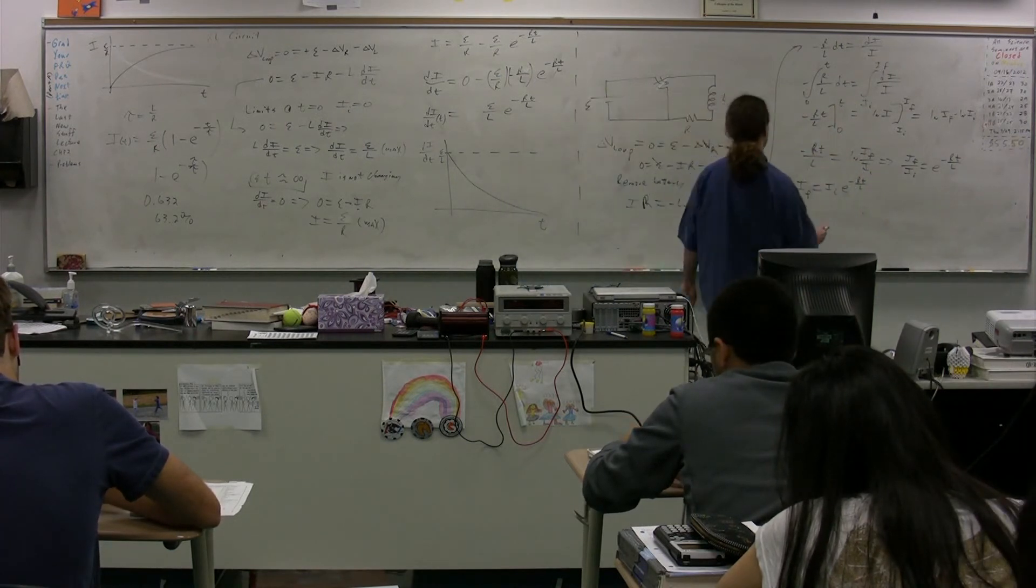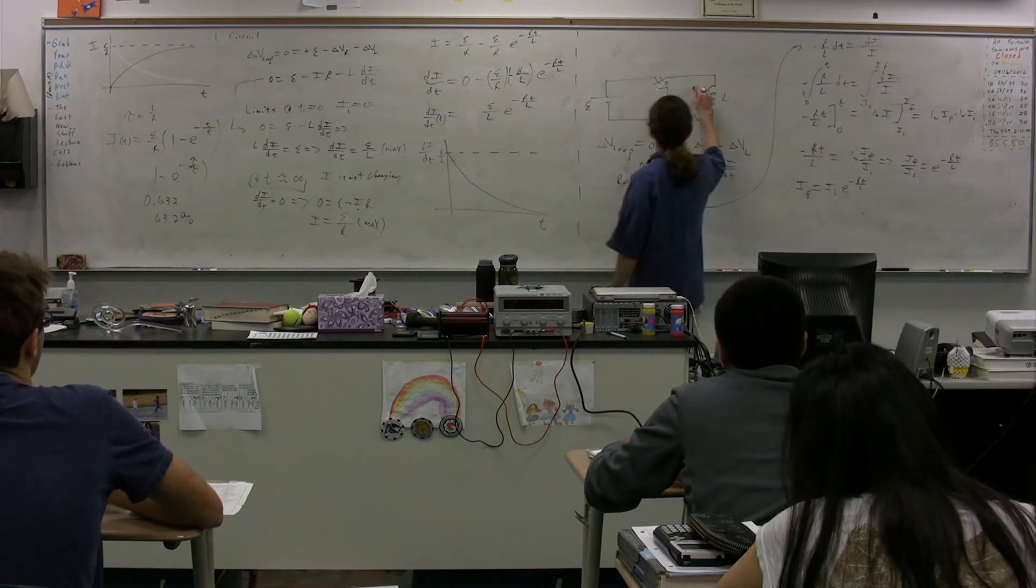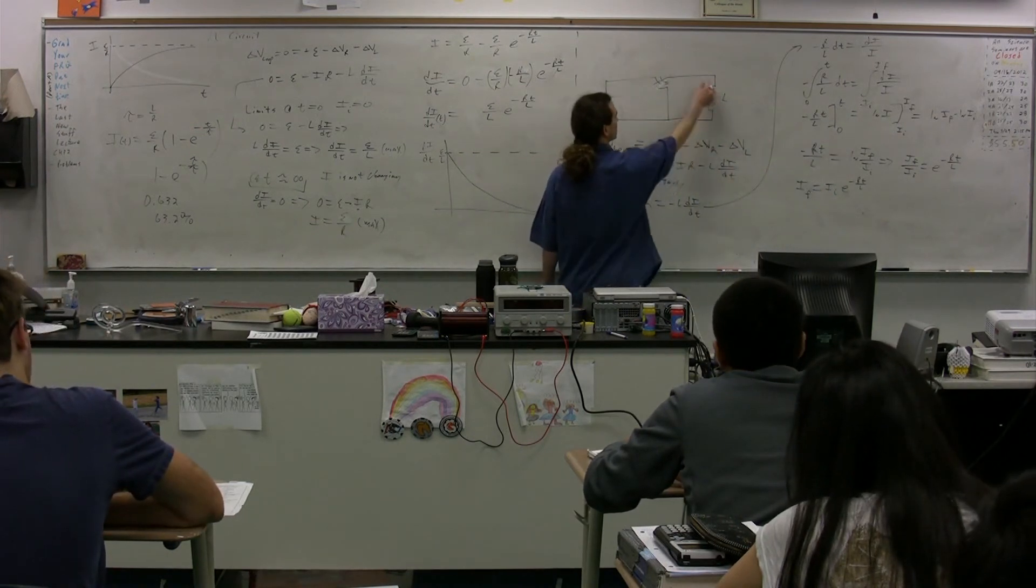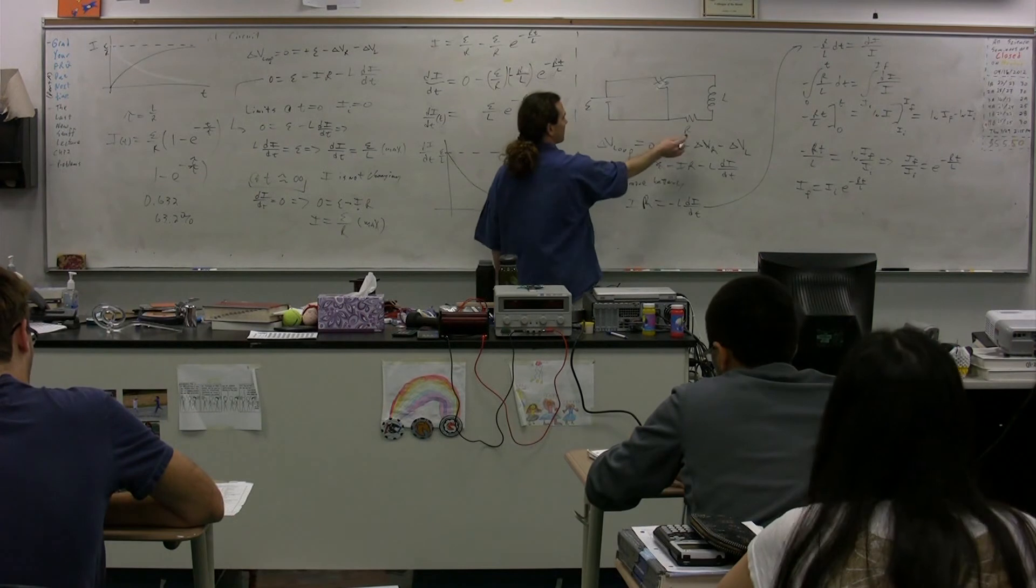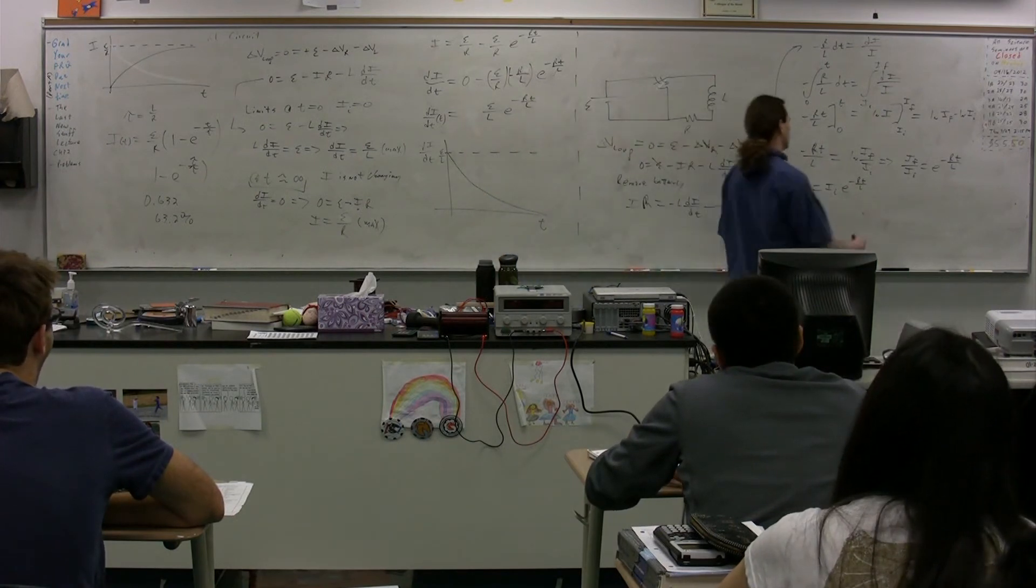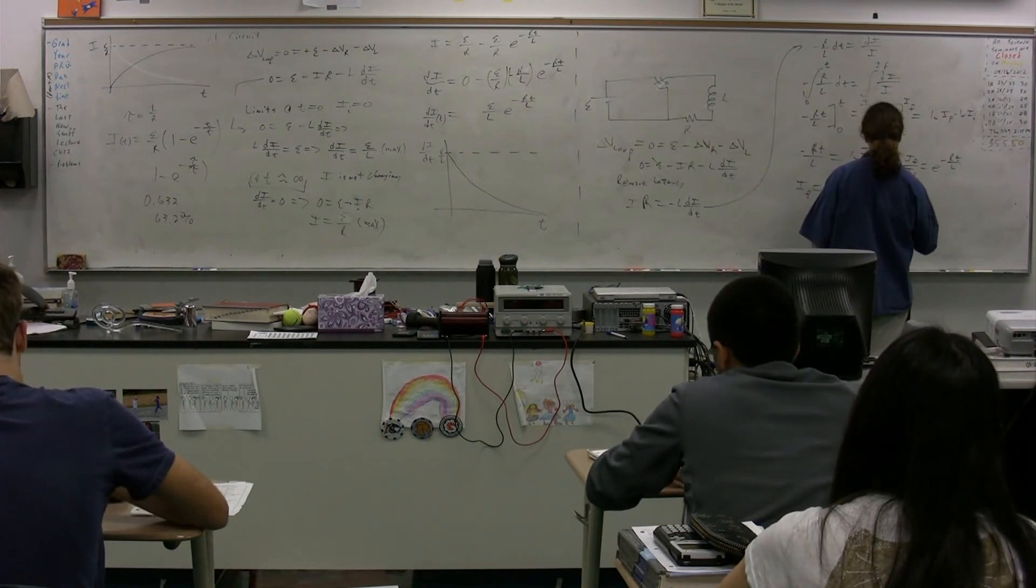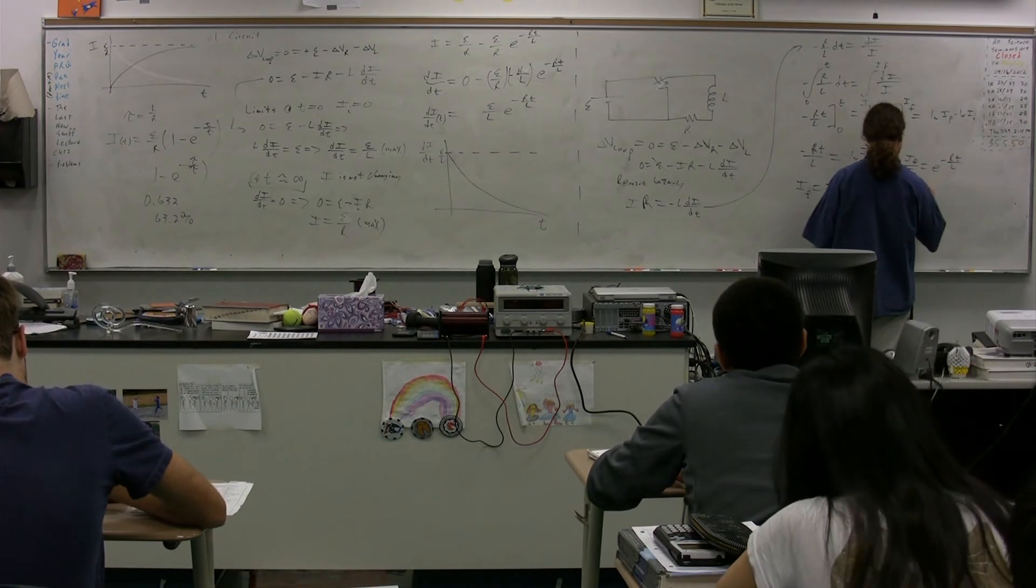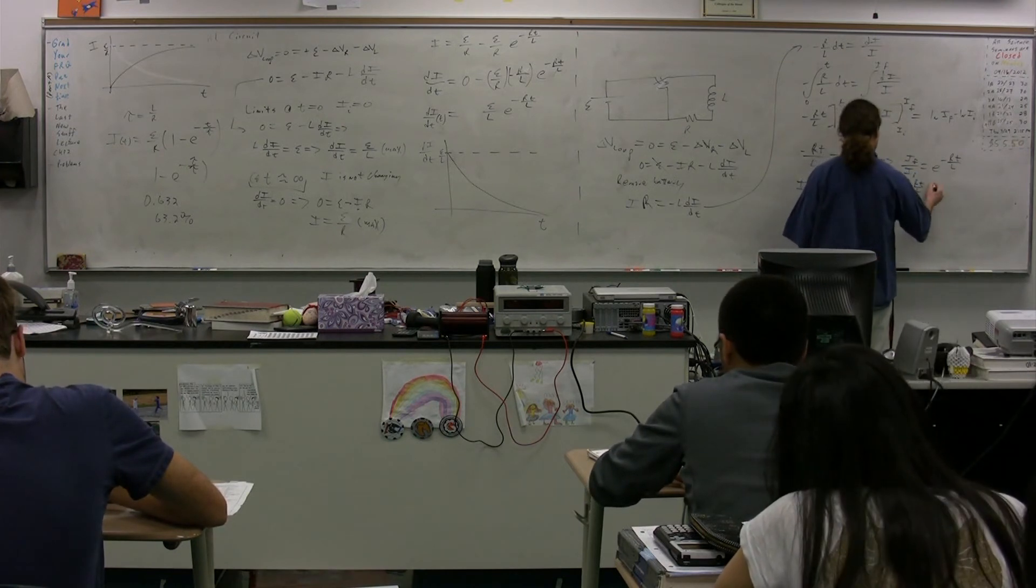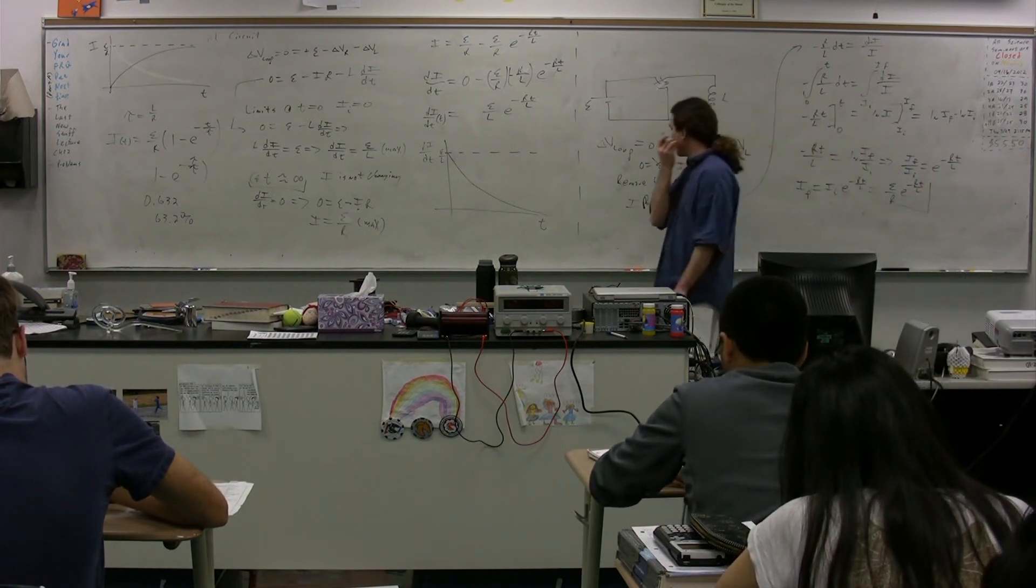Current initial in this particular case would be equal to, if you look at it, the current initial would just be equal to the EMF divided by the resistance. We have the same argument we had for the last one, so I'm not going to go through that. So that's the current as a function of time.